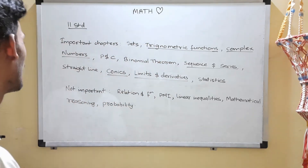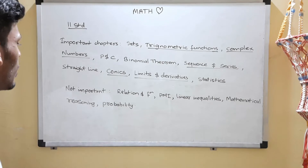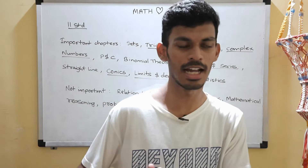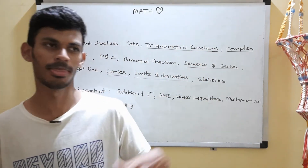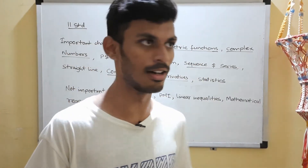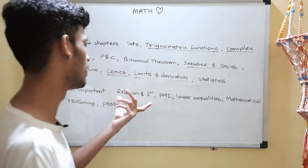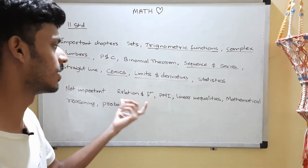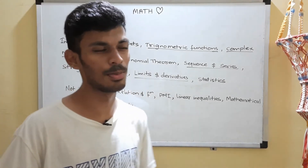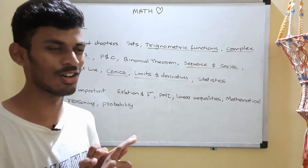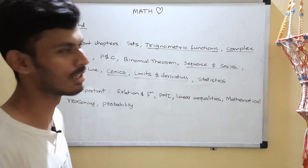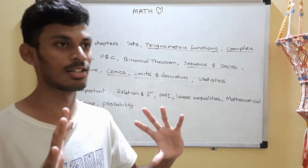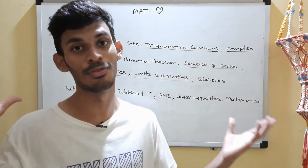In the not-important category, we have Relations and Functions from the 11th standard side — it's not that important. The 12th standard version is very important, but for 11th standard they might ask for computation of domains and ranges, and questions are very occasionally asked. PMI — one question may be asked every four years — it's simple but not very important for BITSAT.